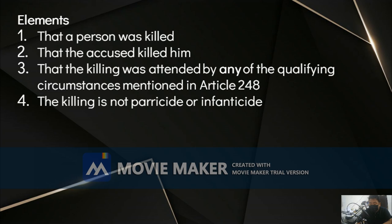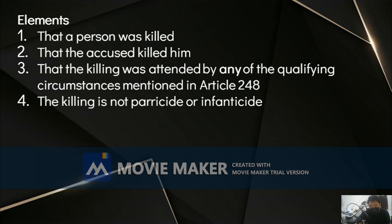In murder, intent to kill must always be proven. Such evidence may consist of the weapons used, the nature, location, and number of wounds inflicted. For example, if someone was stabbed 50 times, the crime is clearly murder with cruelty. Intent can also be proven by words used by the offender before, at the time of, or immediately after killing the victim. If the victim dies because of the deliberate act of the malefactor, intent to kill is conclusively presumed.